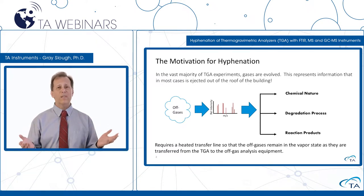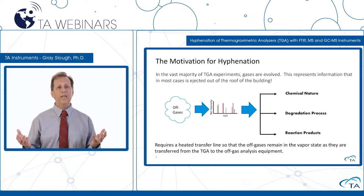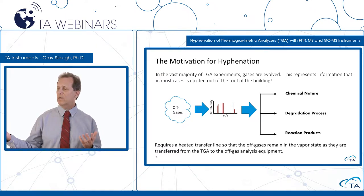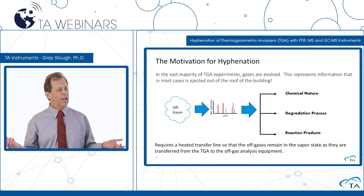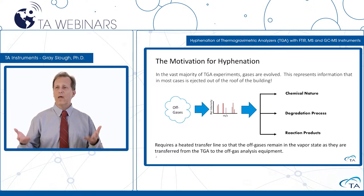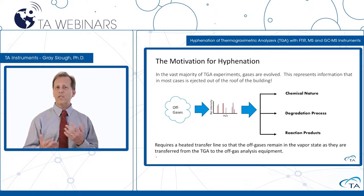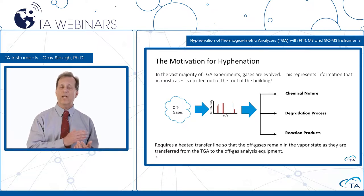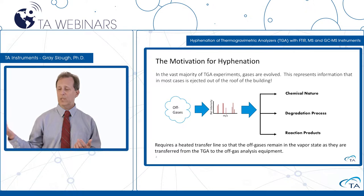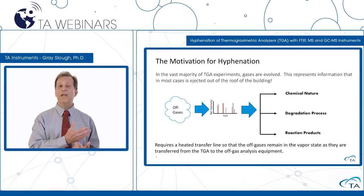The idea behind hyphenating a TGA with a spectrometer is to take those off-gases and do some type of chemical analysis on them, which could tell us something about the chemical nature of the sample, the particular degradation process occurring as the sample is heated, or potentially reaction products within the sample. Typically, this type of hyphenation just requires a heated transfer line attached to the TGA on one end and to the spectrometer on the other end, heated to keep the gases in the gaseous state as they proceed from the TGA to the spectrometer.